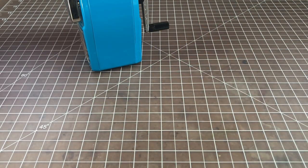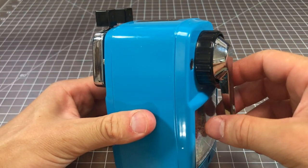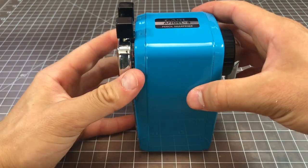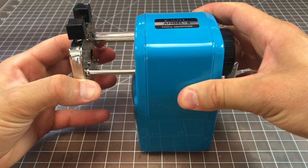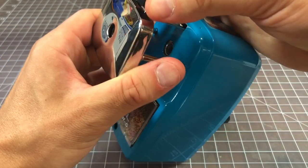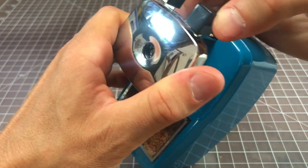Here is the pencil sharpener. Very simple design. You turn this to sharpen the pencil. This piece pulls out, it locks, you open the jaws to feed the pencil in here. You can see those jaws right there.